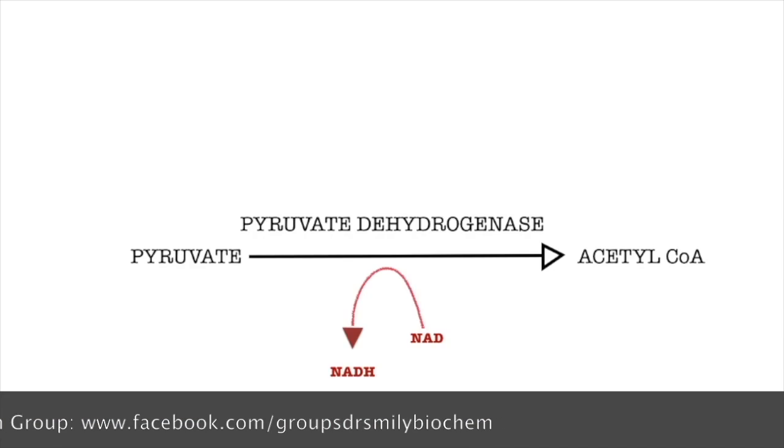Now let's also see link reaction. In link reaction, pyruvate forms acetyl-CoA with the help of enzyme pyruvate dehydrogenase. This reaction also requires NADH and when NADH gets depleted, acetyl-CoA production also decreases.